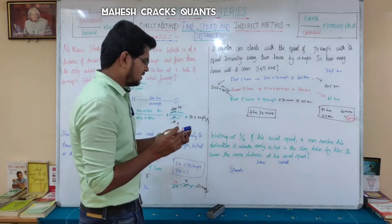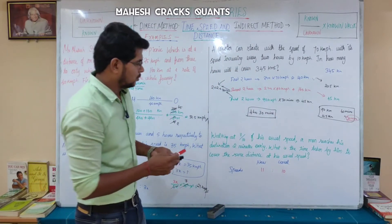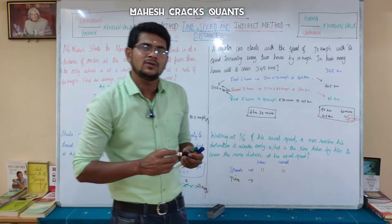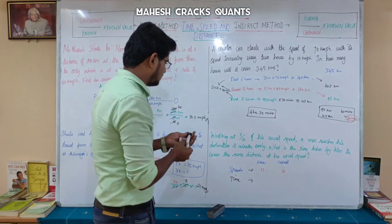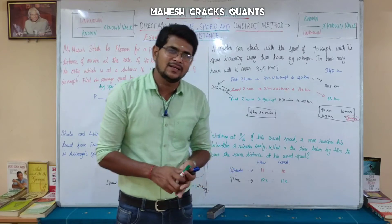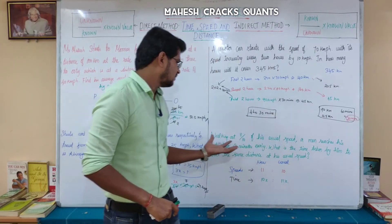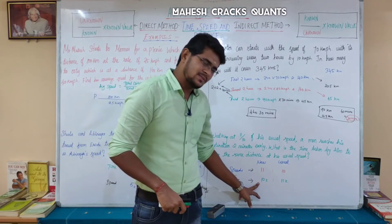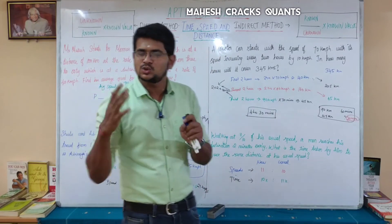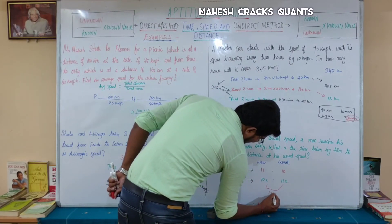Speed ratio is 11 is to 10, where 10 is the usual speed and 11 is the new speed. Since time and speed are inversely proportional, the time ratio is inverted: usual time is 11x and new time is 10x. The difference is 1x, and since he arrives 2 minutes early, 1x equals 2 minutes.